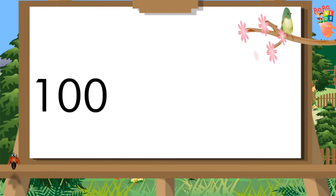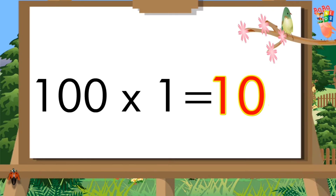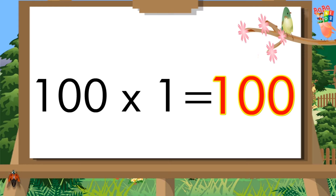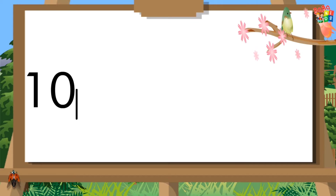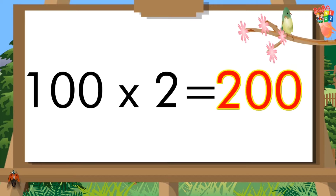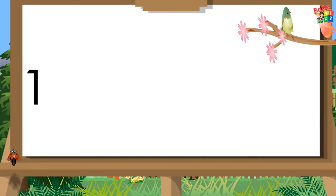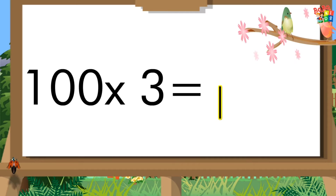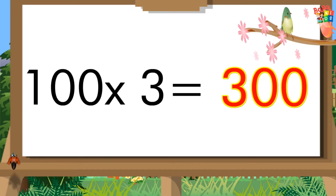Hundred ones are hundred. Hundred twos are two hundred. Hundred threes are three hundred.